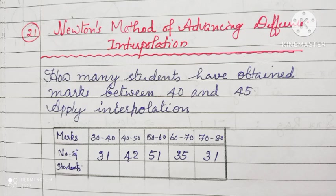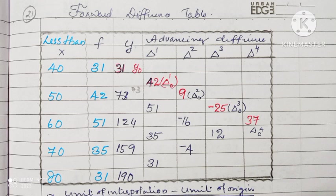How many students have obtained marks between 40 and 50? Apply interpolation. We have to make a table for finding this one. Forward difference table we have to make: 31, 42, 9, minus 25 and 37 are using for calculation.